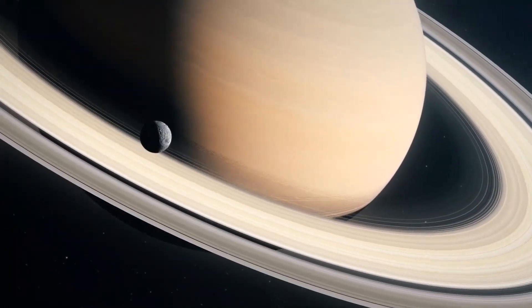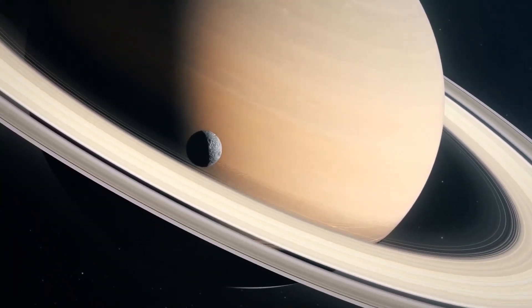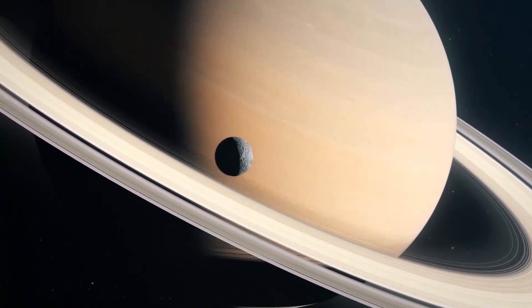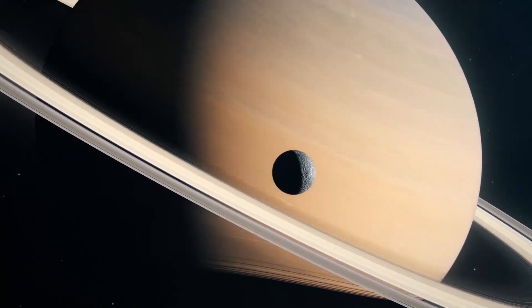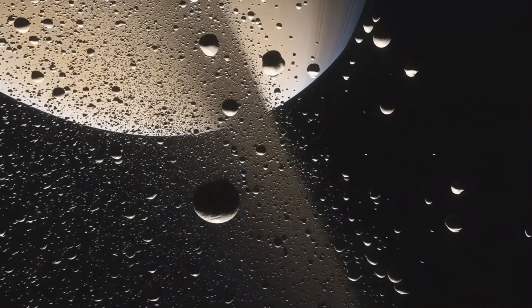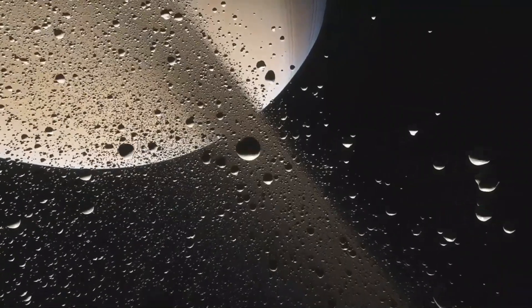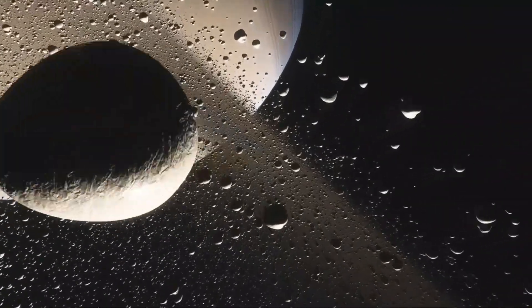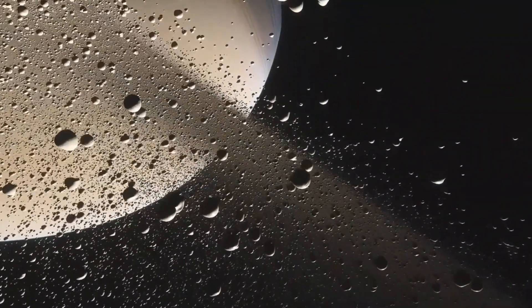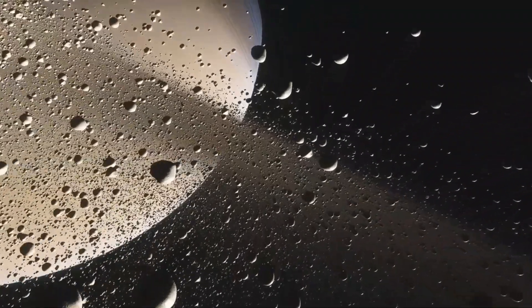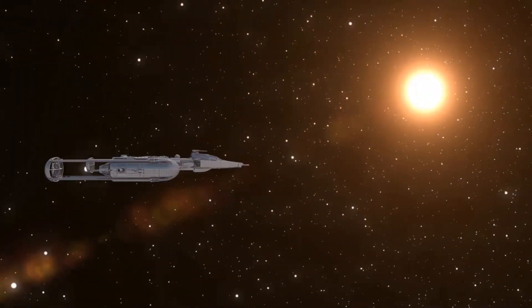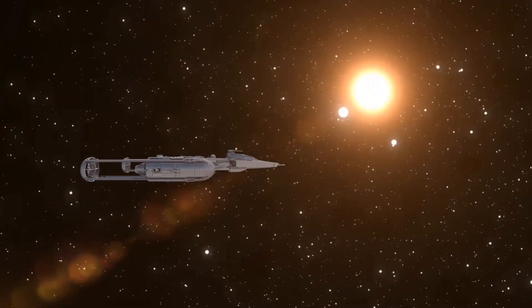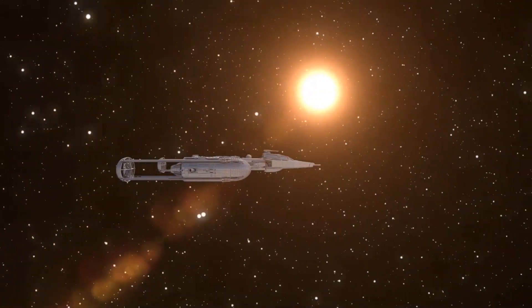The Voyager program used the favorable alignment of Jupiter, Saturn, Uranus, and Neptune, which occurs only once every 175 years, and was set to happen in the late 1970s. The space probes used gravitational assists, namely the use of the relative movement and gravity of a planet or other astronomical object to alter the path and speed of a spacecraft, and thus saving propellant and reducing expense. Through gravity assistance, it's possible to either accelerate the spacecraft, decrease its speed, or redirect its path.